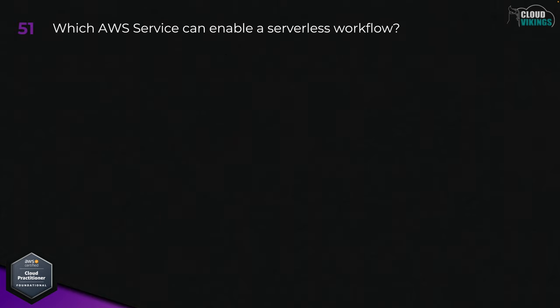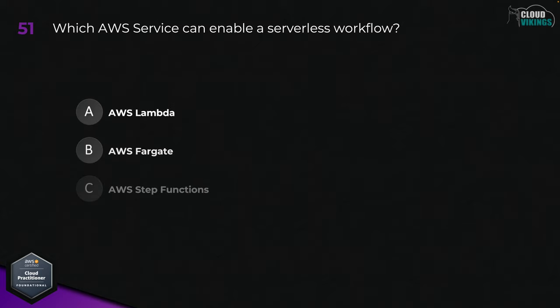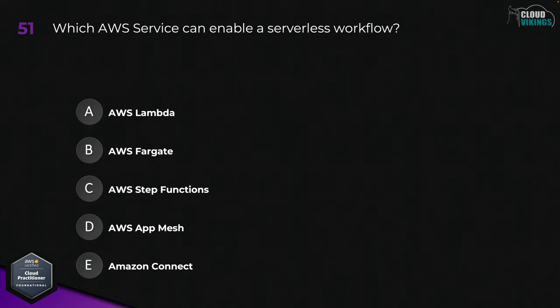Question fifty-one: which AWS service could enable a serverless workflow? Options are: A, AWS Lambda; B, AWS Fargate; C, AWS Step Functions; D, AWS App Mesh; or E, Amazon Connect. To support a serverless workflow, the best answer here would be C, AWS Step Functions.